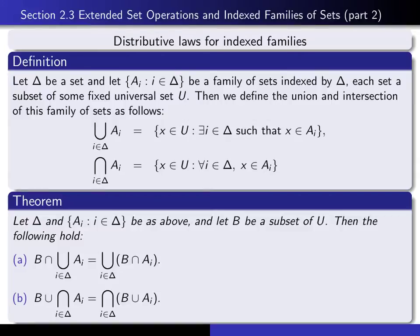This theorem is what I refer to as the distributive laws for indexed families of sets. In addition to all of the sets a sub i, we also give ourselves a subset b of u. The first property says that intersecting b with the union of all the a's is the same as first intersecting b with each a separately and taking the union of all those sets. The second says that taking the union of b with the intersection of all the sets is the same as taking the union of b with each a sub i and then intersecting all of the resulting sets.